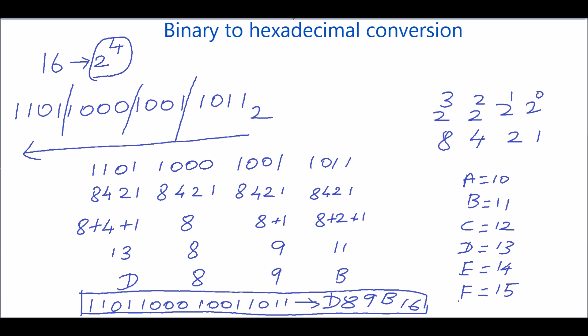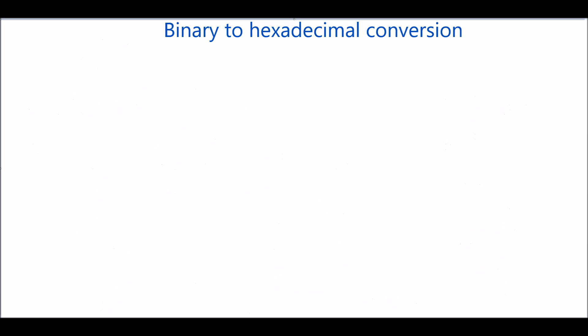This example does not have any fractional portion. Next we will see another example with a combination of an integer and a fractional portion. We will now convert the binary number 1010101.010101.